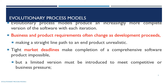Tight market deadlines make completion of a comprehensive software product impossible, but a limited version must be introduced to meet competitive or business pressure. This is where a relevant process model like the evolutionary process model becomes necessary.